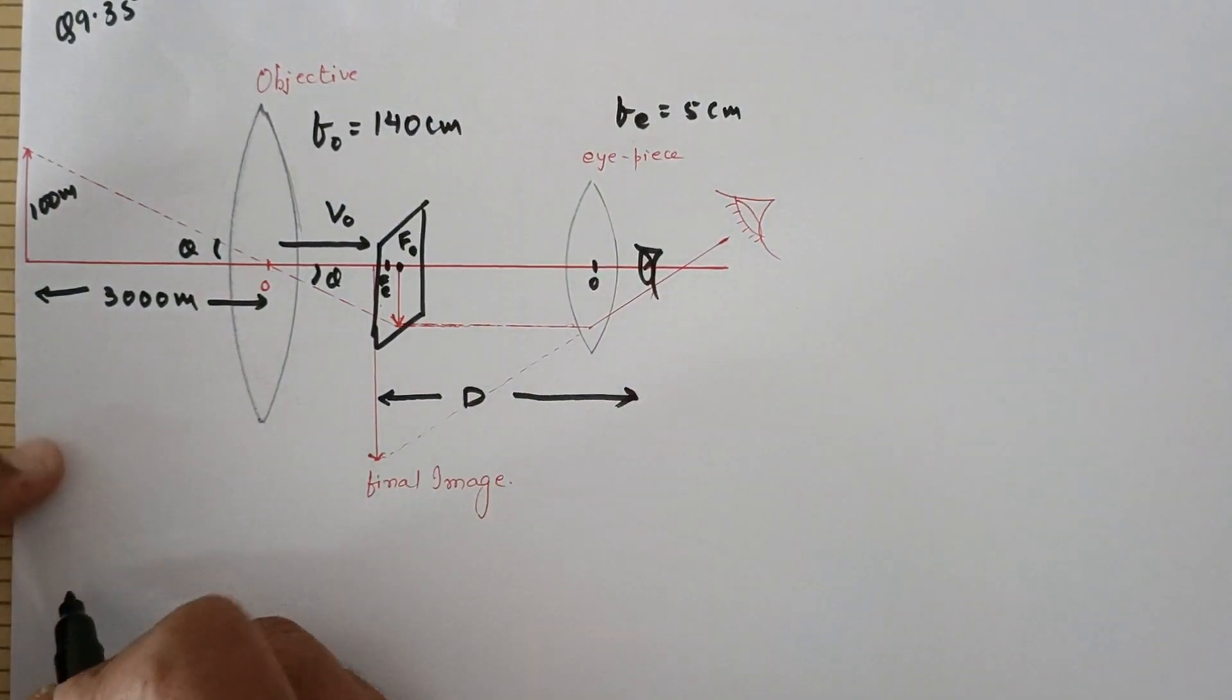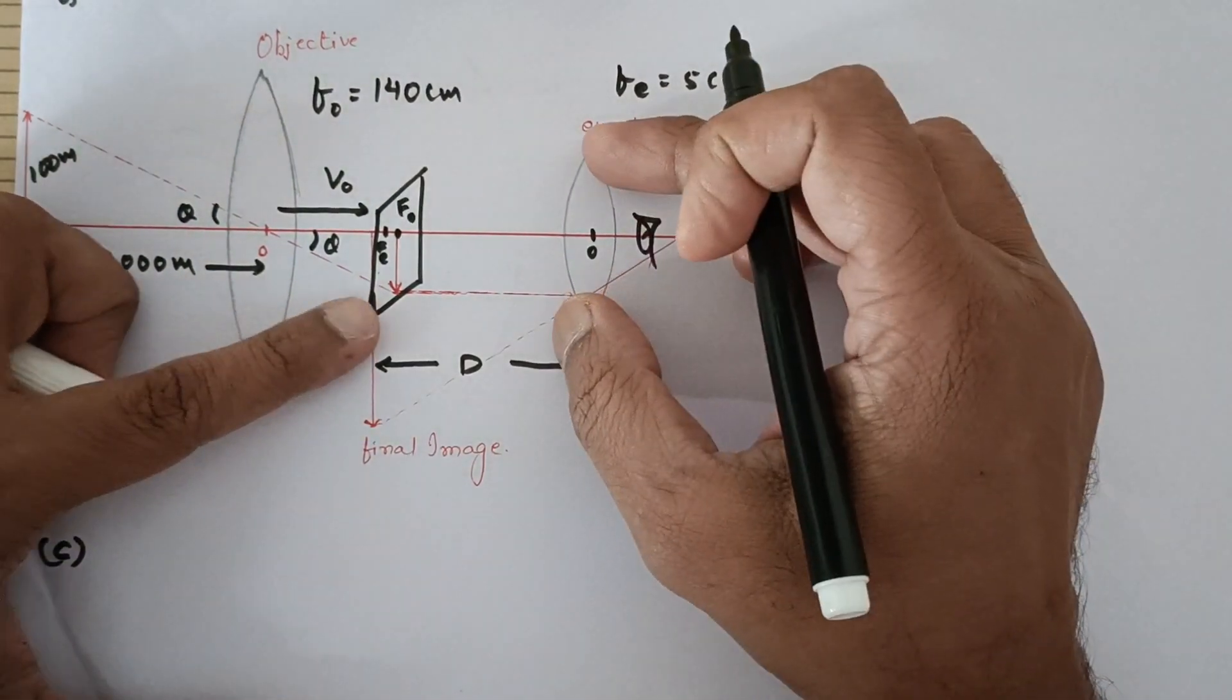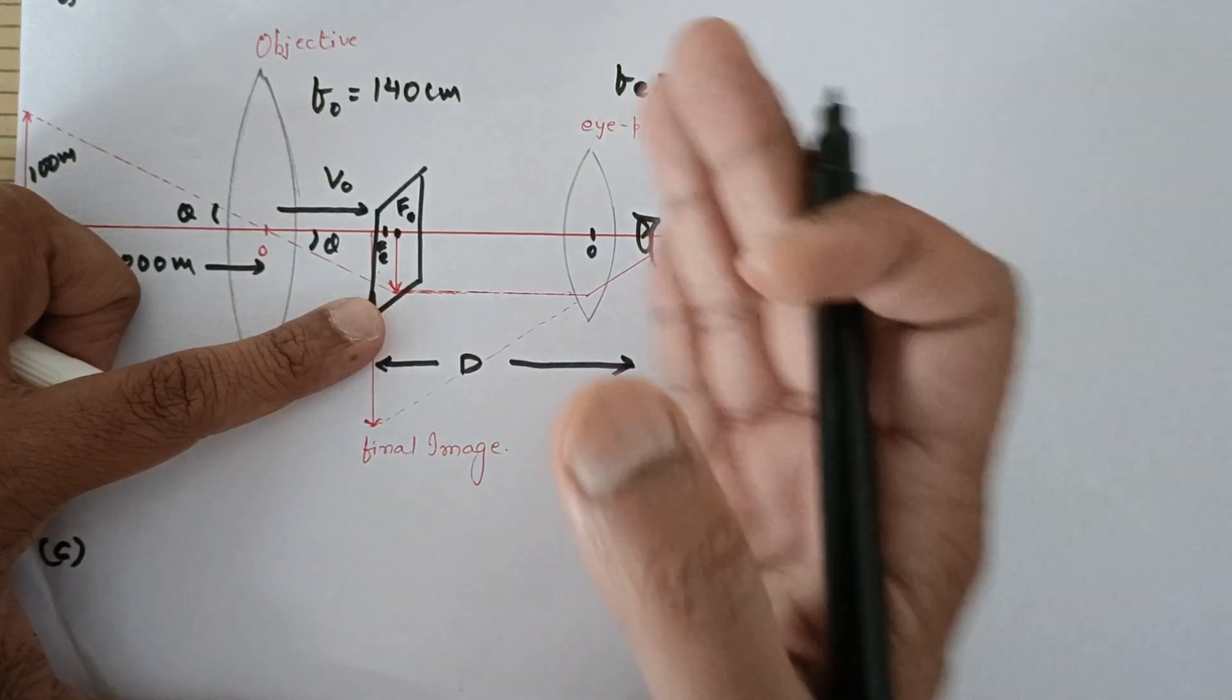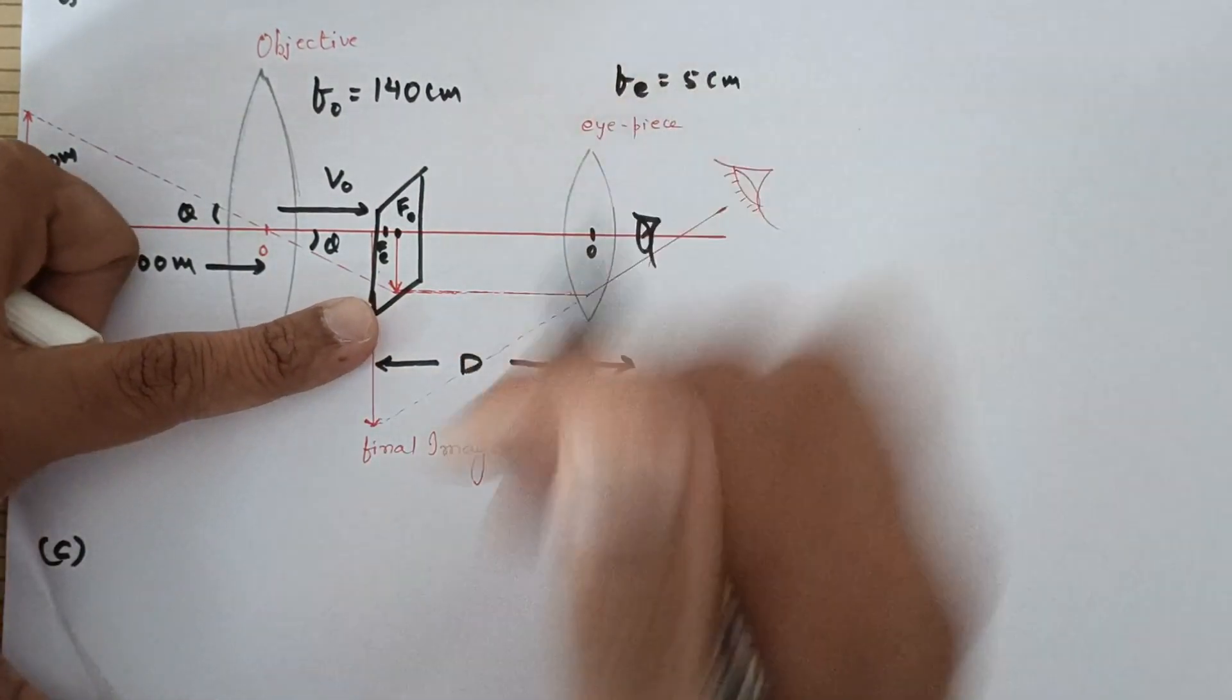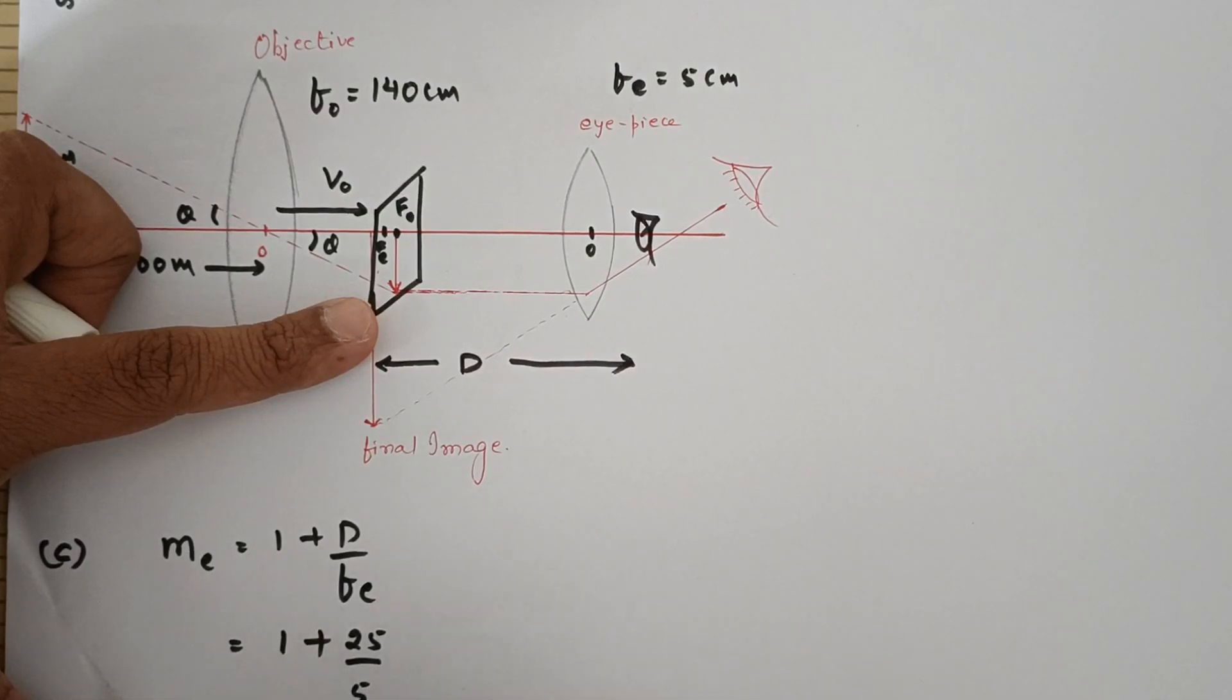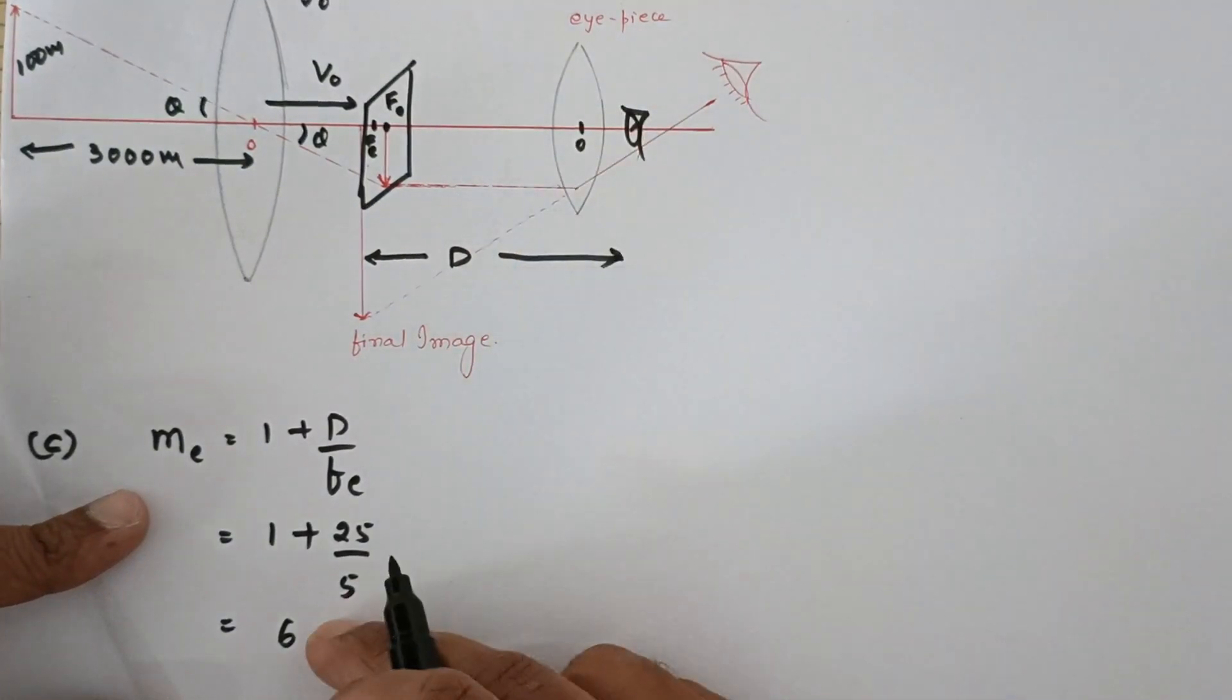First let us calculate the C part because that is the easiest. The magnifying power for a convex lens can be either D/f or 1 + D/f. When the final image is formed at D, the magnifying power of the eyepiece is given by 1 + D/fₑ. So this is 1, now D is 25, focal length is 5, so that is 1 + 5, which is 6. The magnifying power of the eyepiece turns out to be 6.